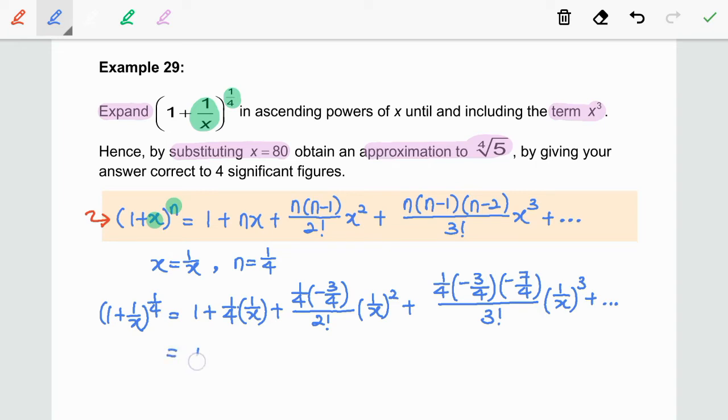So, we got 1 + 1/(4x) - 3/(32x^2) + 7/(128x^3) + ... as our final expansion.